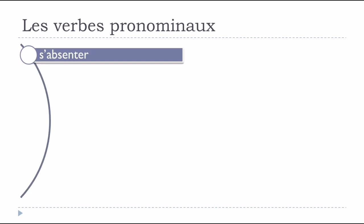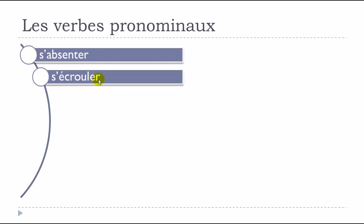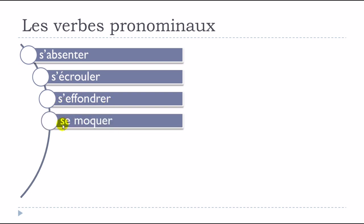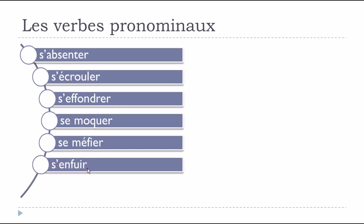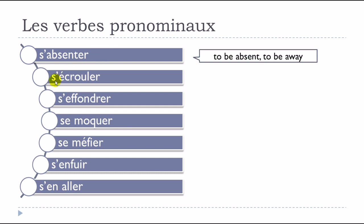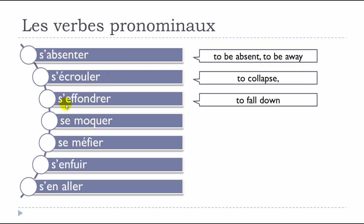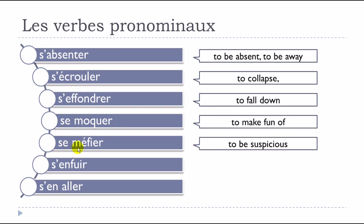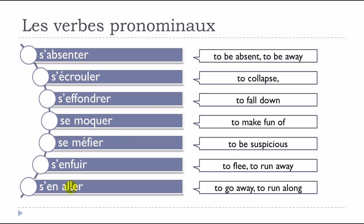Here are some examples: s'absenter, s'écrouler, s'effondrer, se moquer, se méfier, s'enfuir, s'en aller. In all these cases, these verbs exist only with se before them - la forme pronominal. Keep in mind that if you want to use them you will have to use them with se, which will modify the way you conjugate them, as we've seen in previous videos.